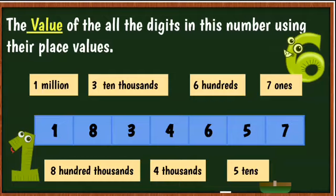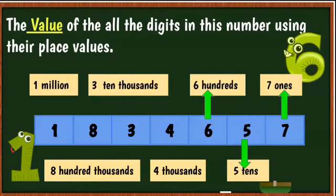Now let's look at the value of all the digits in this number using their place values. Reading from right to left, starting with the smallest: seven would be seven ones, five would be five tens, six is six hundreds, four is four thousands, three is ten thousands.